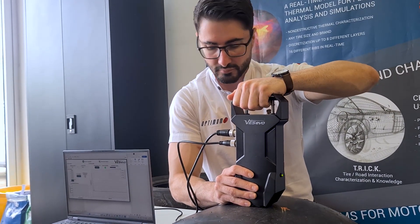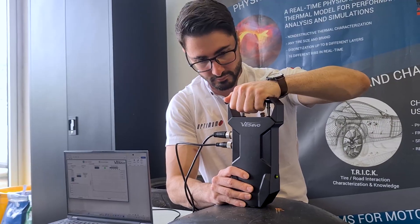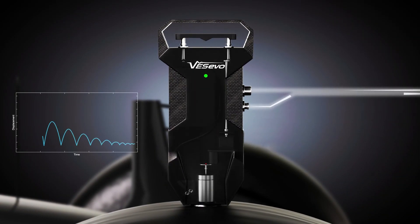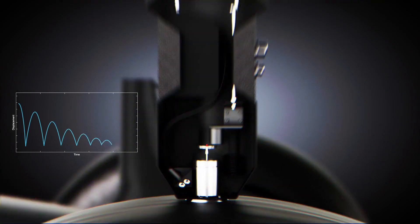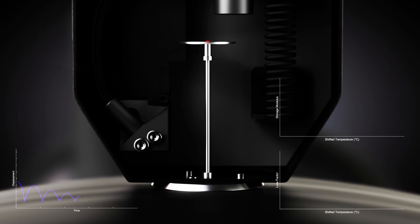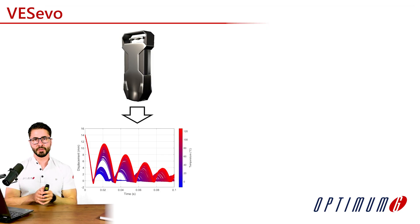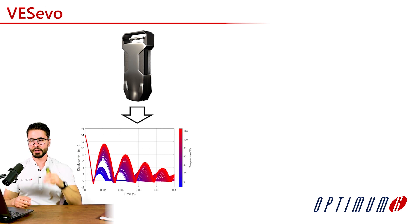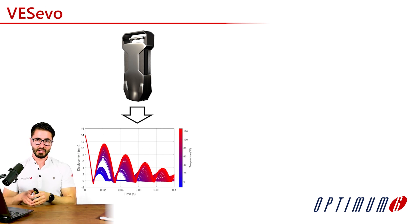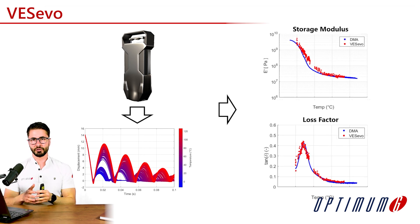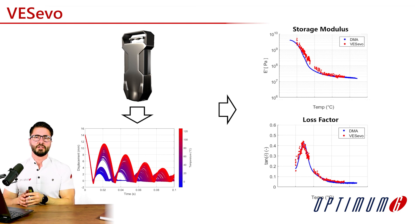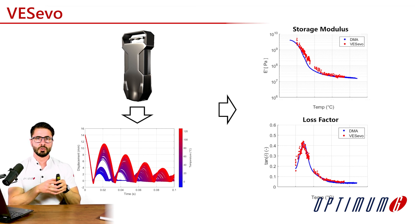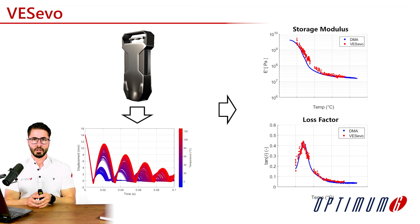Another option for measuring viscoelastic properties is using the Vesevo device. The device works by releasing an indenter always from the same height. It can then measure how the indenter is bouncing over the tire, and from there we can characterize the tire. We can perform such measurements over a temperature range. Here we can see the bouncing profile at different temperatures, and from that the software is able to extract the storage modulus and the loss factor, compared versus a typical DMA measurement. The main advantage of such a method is that it's non-destructive, meaning that we can do these measurements with our tires without losing them. We can also do them at the track or in the field to characterize the tire in different conditions.